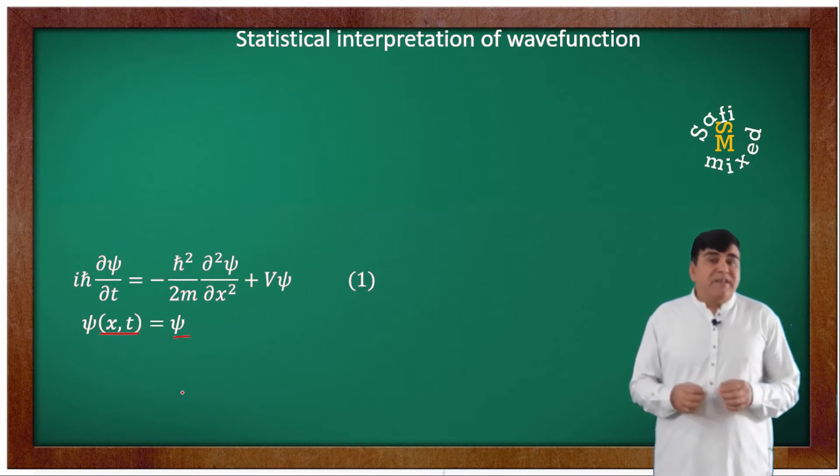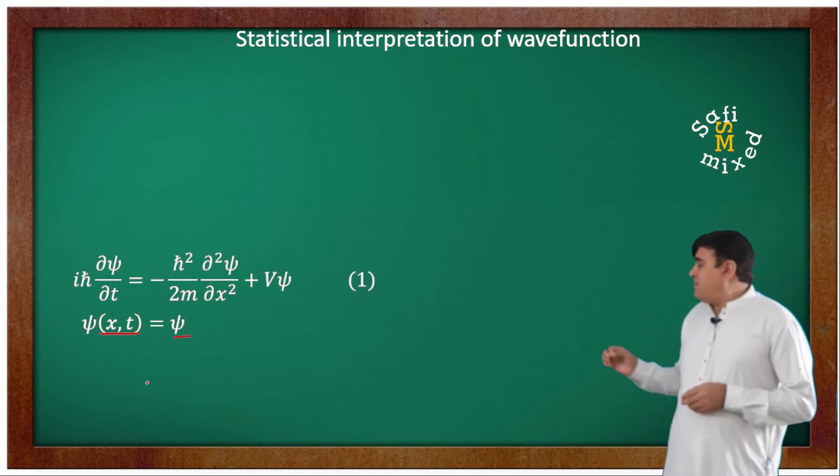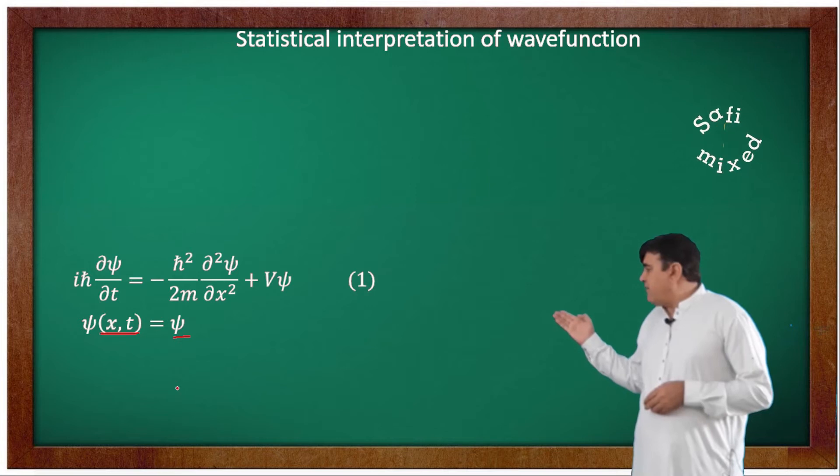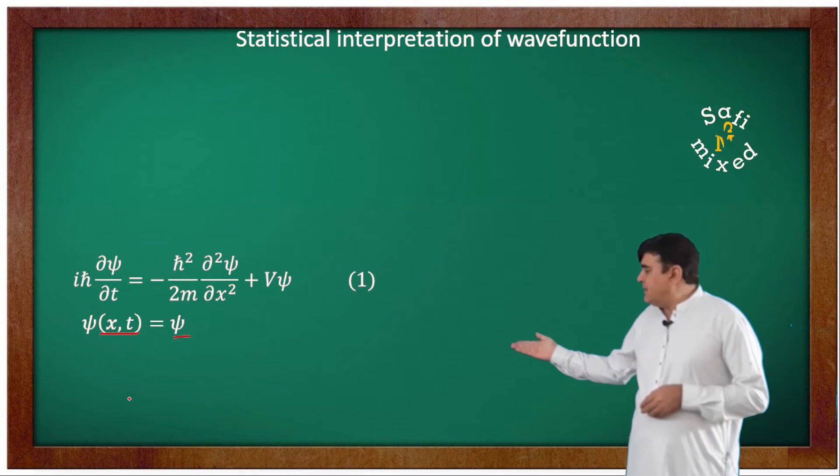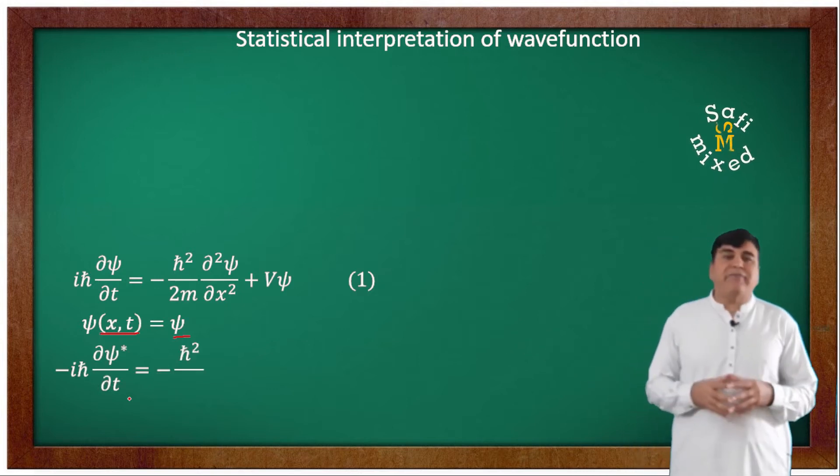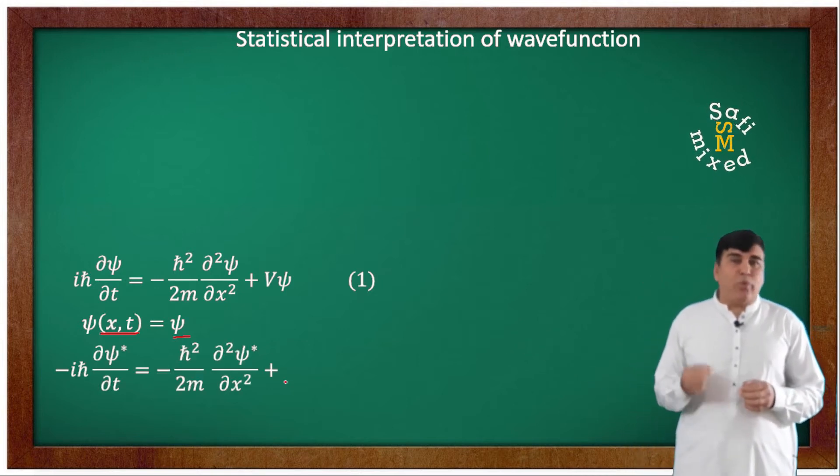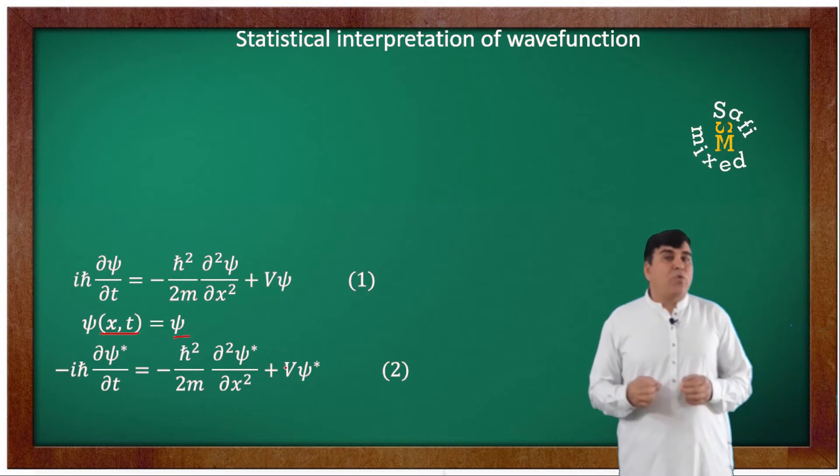The complex conjugate of this equation can be written by changing the sign in front of iota and putting a steric over the wave function like that in this one equation. Where I have considered the potential function V as a real quantity.